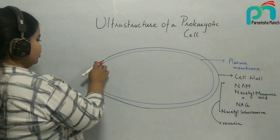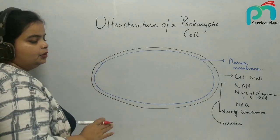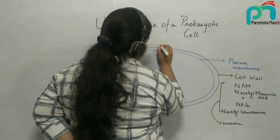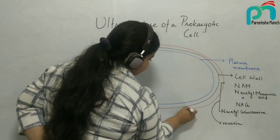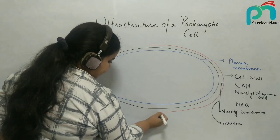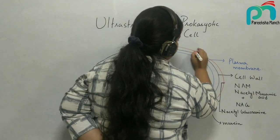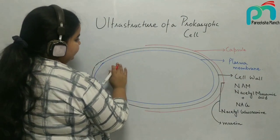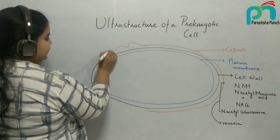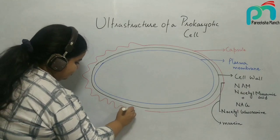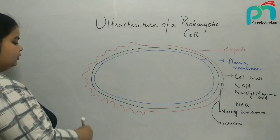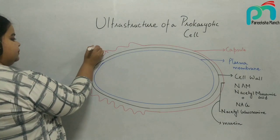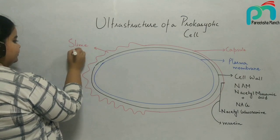The bacterial cell also has an outermost covering; an additional protection is provided to bacterial cells. Again, they have an outermost covering and that covering is known as capsule. If it is tough, it is known as a capsule. Or in some bacteria, this covering is present in the form of a slime layer — a sticky layer. So in some bacteria it is present as a capsule and in some bacteria it is present as a slime layer.